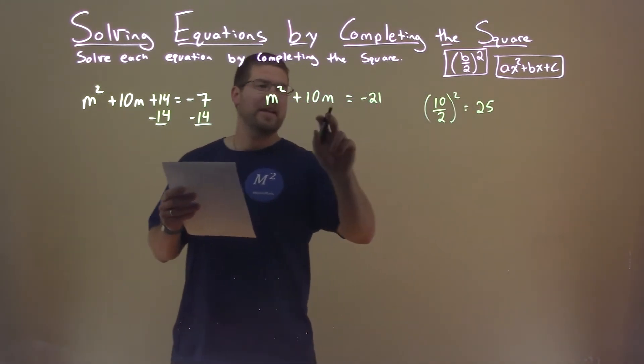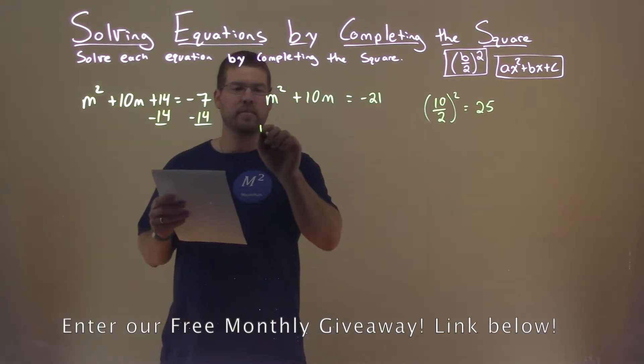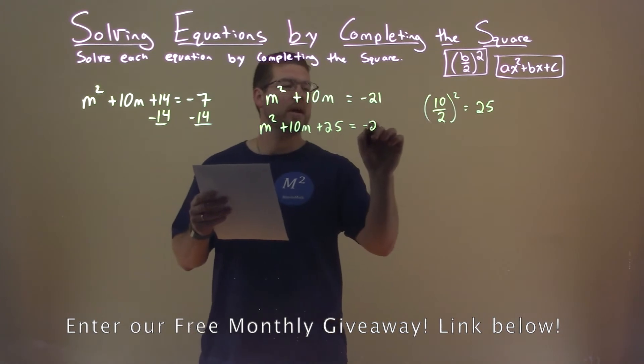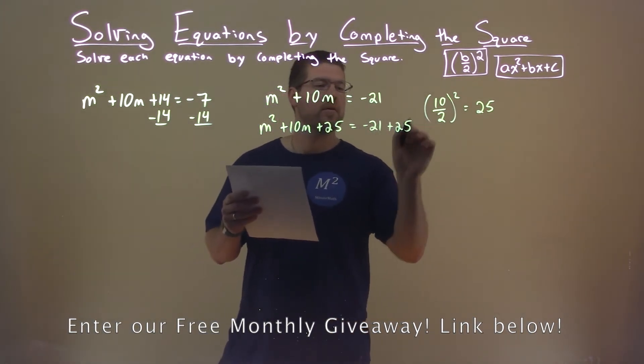So I'm going to take that 25 and add it to both sides of the equation. m squared plus 10m plus 25 equals negative 21 plus 25.